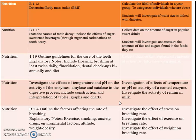Nutrition continues with the objective to state the causes of tooth decay, including the effects of sugar-sweetened beverages — sugar and carbonation — on tooth decay. Persons who eat a lot of sweets and drink a lot of sodas can be given a questionnaire to find out if those things affect their tooth decay. Students can collect data on the amount of sugar in popular sweetened drinks, looking at labels, and investigate whether consumption of these drinks affects tooth health. Students will also investigate and measure the amount of fats and sugar found in the food they eat.